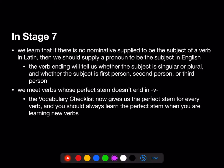In Stage 7, we learn that if there's no nominative supplied to be the subject of a verb in Latin, then we need to supply a pronoun to be the subject in English.